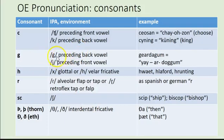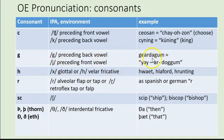G is a G before a back vowel, as in 'gum,' but it's a Y sound — remember in IPA the J makes a Y sound — before a front vowel. So it's 'gear' or 'dagum.' H is that glottal or velar fricative, so it's 'hat,' 'hlaford,' 'hrunting.'